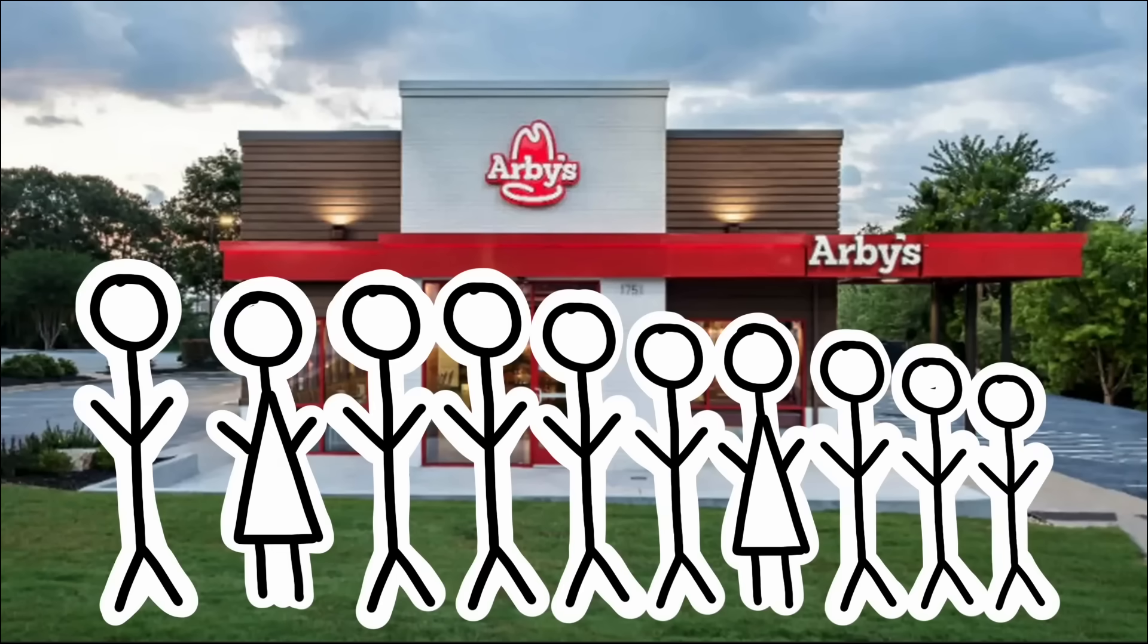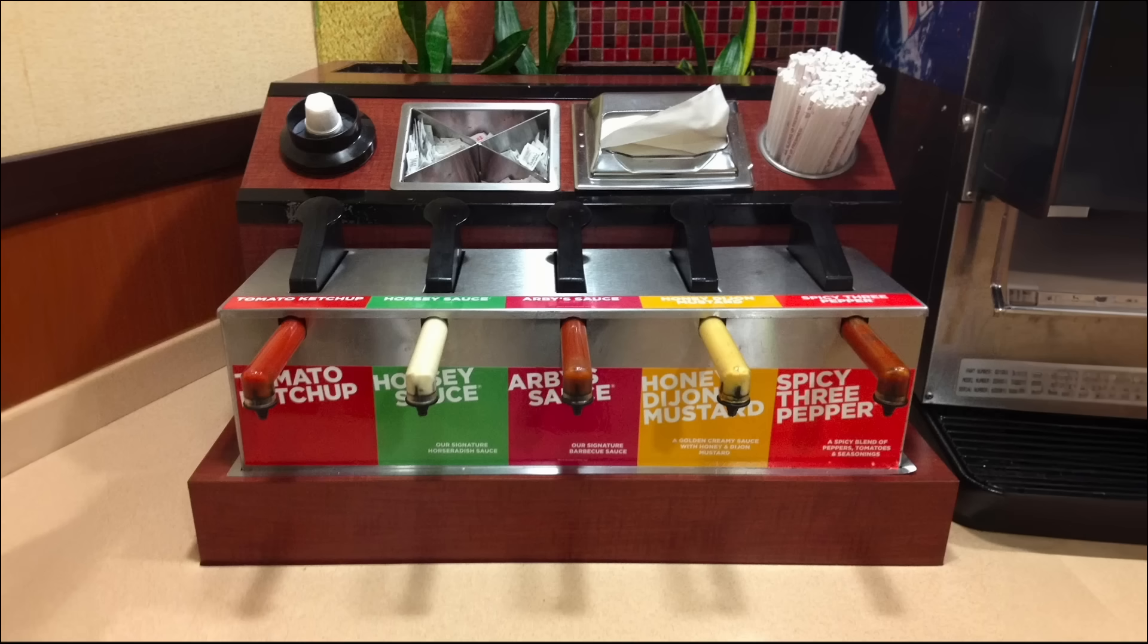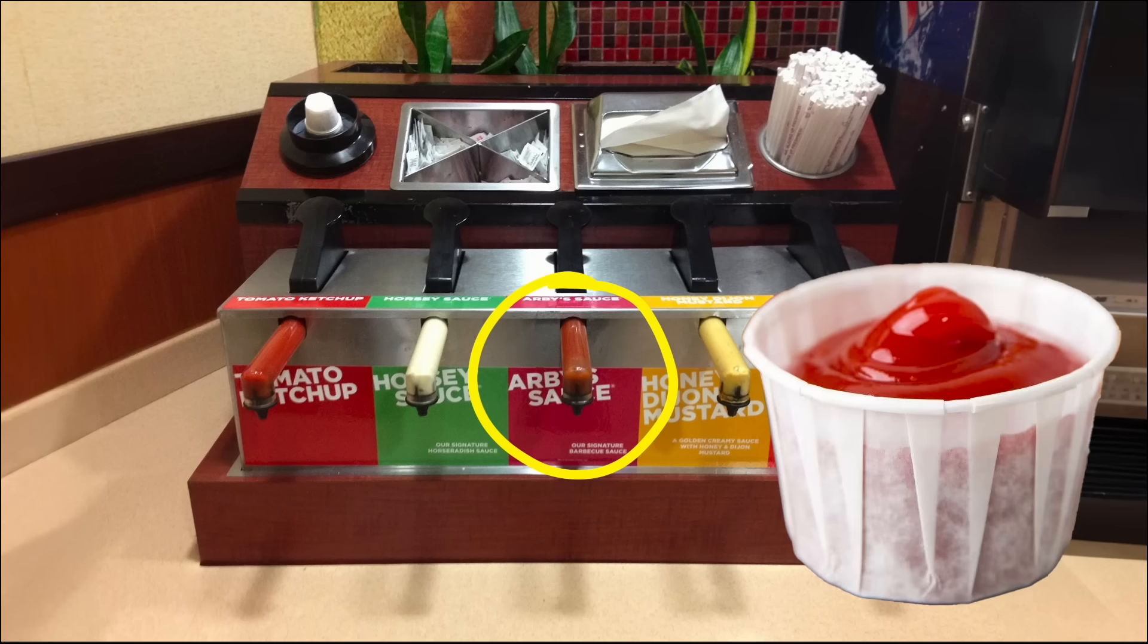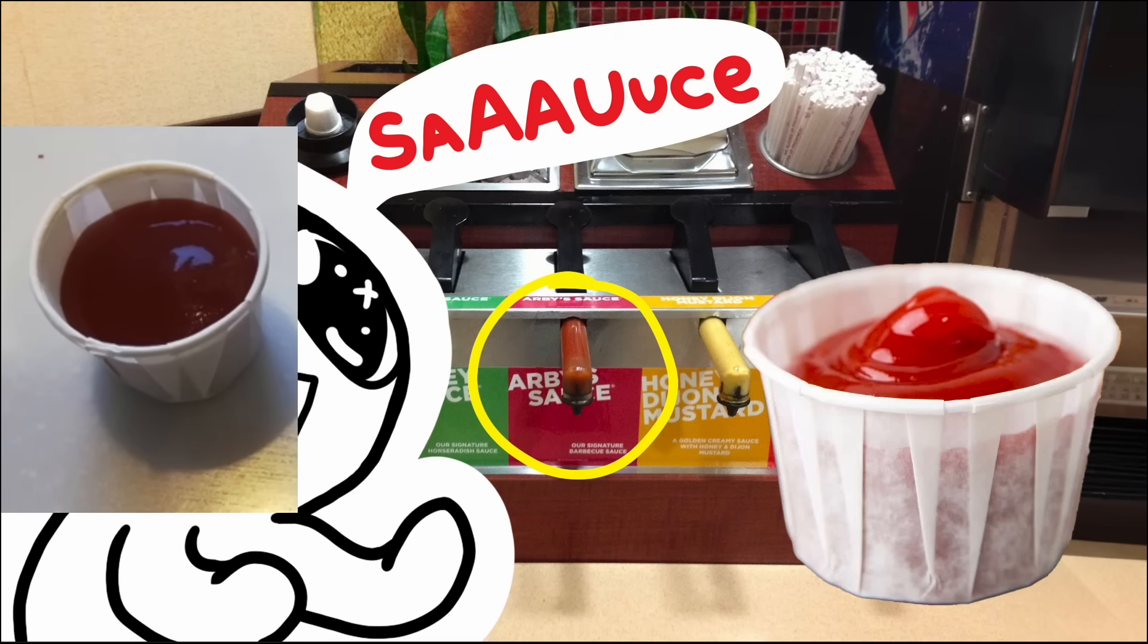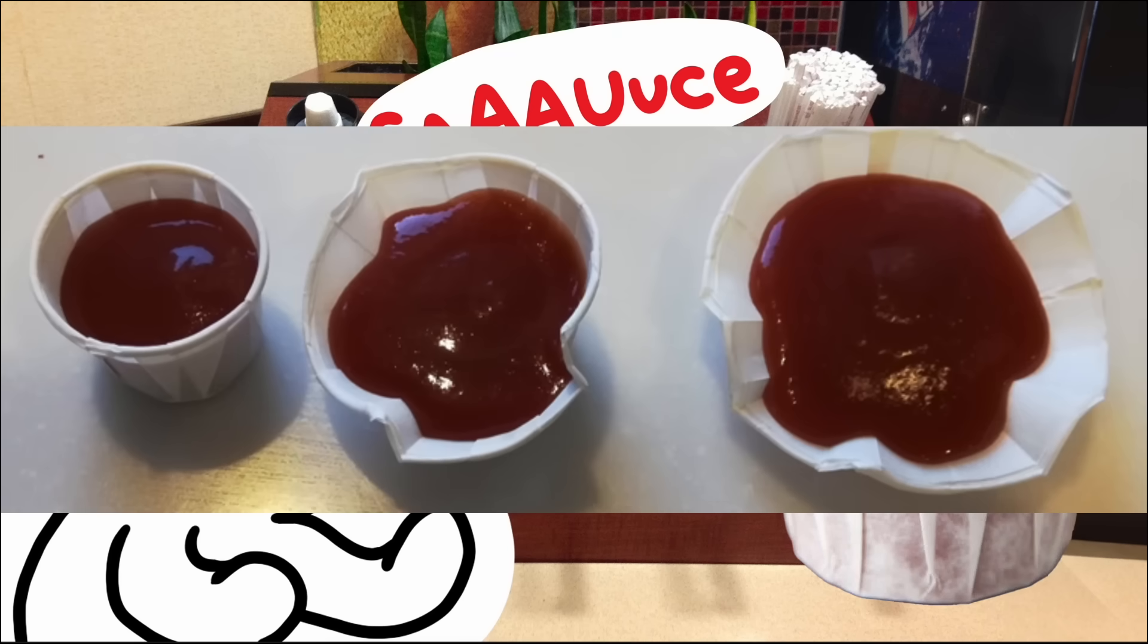Once when we took the family out to eat at Arby's, my son Spencer, who's perhaps 15, went to the condiment counter to start loading up the little paper condiment cups with Arby's sauce. And he loves Arby's sauce. So he wanted to load a lot of sauce in his cup and started to spread the cup out by releasing some of the folds. This made the top of the cup a larger radius, but it also lowered the height of the cup.